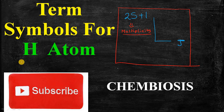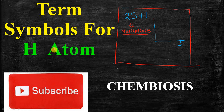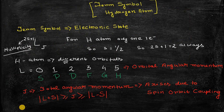Hello everyone. In this lecture I am going to talk about term symbols for the hydrogen atom. A term symbol represents the electronic state of an atom. I will show you how to compute the term symbol for the hydrogen atom. Computing the term symbol for a general atom is a bit complicated, but in the case of hydrogen atom it is much simpler. Please subscribe to my channel Kembiosis.